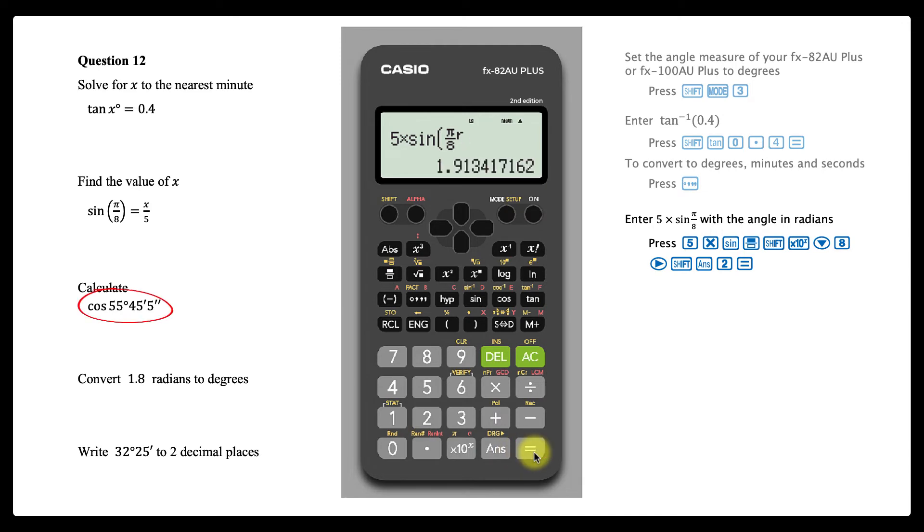To calculate the cosine of an angle given in degrees, minutes and seconds, press the cos key, then enter the angle, pressing the degrees, minutes and seconds key after the degrees, minutes and if necessary the seconds. Don't be alarmed by the calculator's use of the degrees symbol between these inputs, it is operating correctly. Press equals to complete the computation.